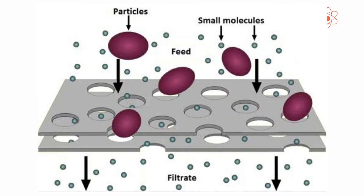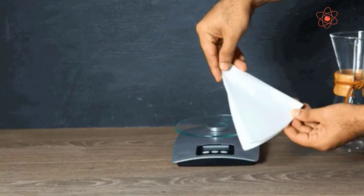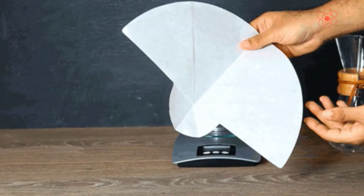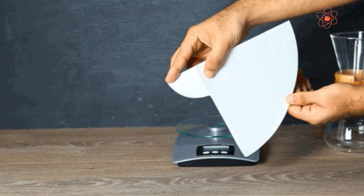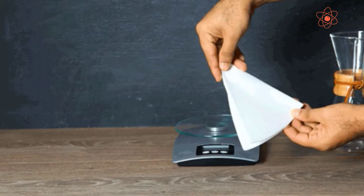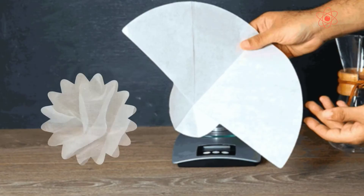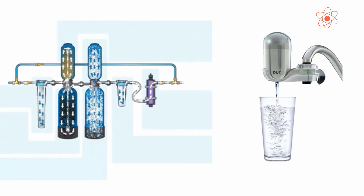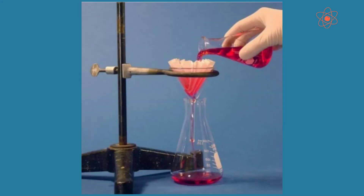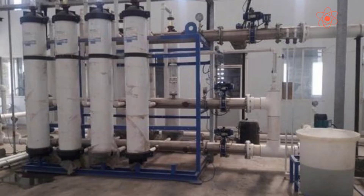In this method, the pores in the filter should be smaller than the size of the particles to be removed. The filter used may be a filter paper or a fine muslin cloth. Filtration is often used in our homes, laboratories, and industries.